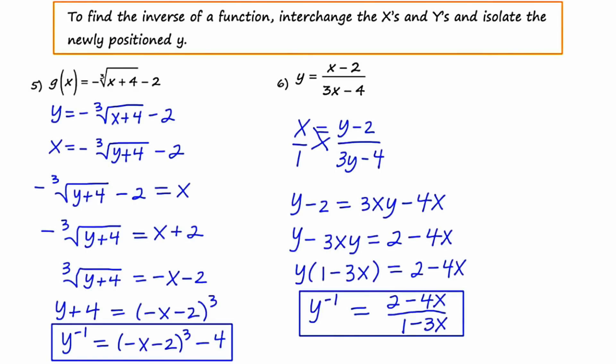Finding inverses really isn't that difficult — you just need to keep a few things in mind. First, swap x and y. Then do some algebra, taking it nice and slow, making only one or two manipulations at a time so you don't make a careless error. Also, don't forget the special notation used to designate something as an inverse — this is not read as "y to the negative 1," it's read as "y inverse."